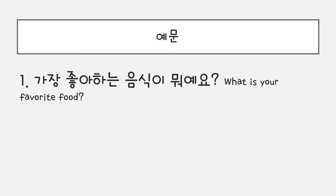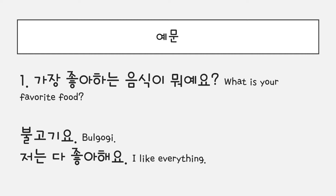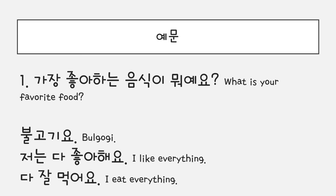Here are some simple answers. For question number one: 가장 좋아하는 음식이 뭐예요? You can say 불고기요. You can also say 저는 다 좋아해요. You can also say 다 잘 먹어요.